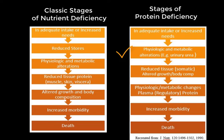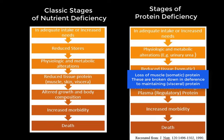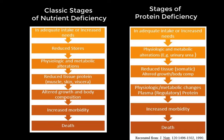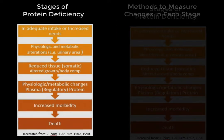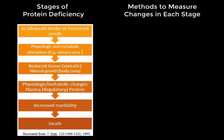The first metabolic alteration in protein deficiency is a drop in urinary urea nitrogen, since urinary urea follows protein intake. The next stage is a loss of somatic tissue — muscle mass is catabolized in deference to maintaining the functional and regulatory proteins, including plasma proteins. With severe protein deficiency malnutrition, there will eventually be physiological and metabolic changes in plasma proteins, but these are linked with the final stages of morbidity and death. Each stage of protein deficiency has distinct characteristics and corresponding assessment methods.